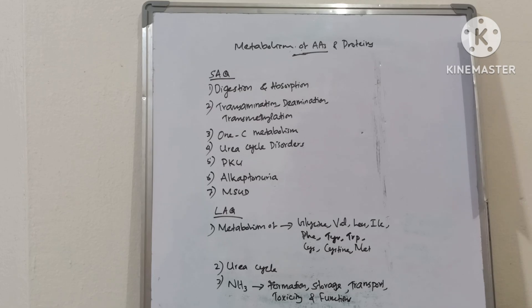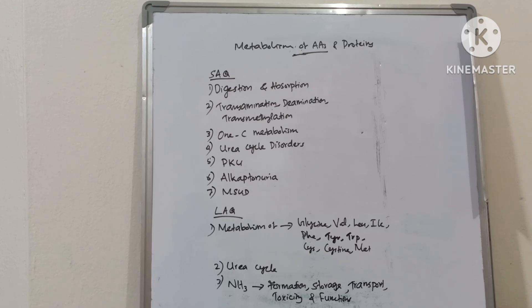Long answer questions: metabolism of amino acids like glycine, valine, leucine, isoleucine, phenylalanine, tyrosine, tryptophan, cysteine and methionine.